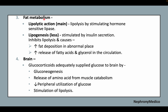On fat metabolism, lipolysis may be seen, or inhibition of lipolysis by insulin secretion leading to increased fat deposition in abnormal places, and increased levels of fatty acids and glycerol in circulation. In the brain: gluconeogenesis, increased yields of amino acids from muscle catabolism, reduced peripheral utilization of glucose, and stimulation of lipolysis are seen.